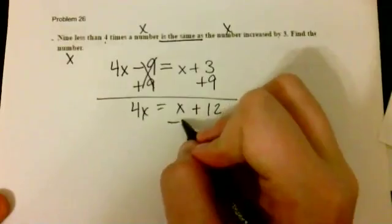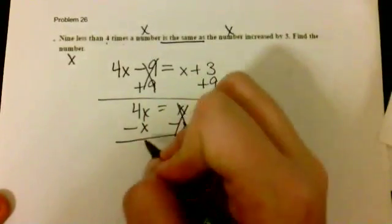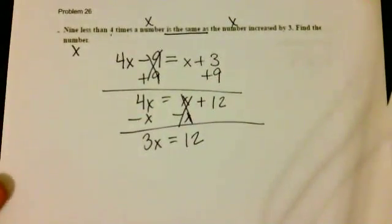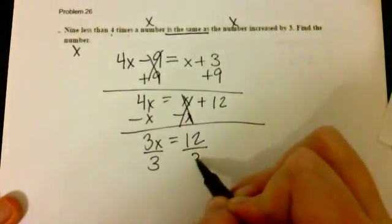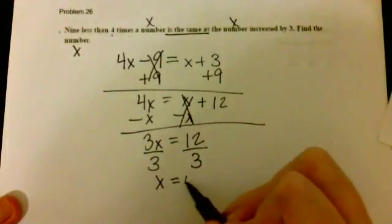We can move X to this side of the equation - we see that it cancels. We have 3X is equal to 12. We can divide by 3 to get X by itself. We see that X is equal to 4.